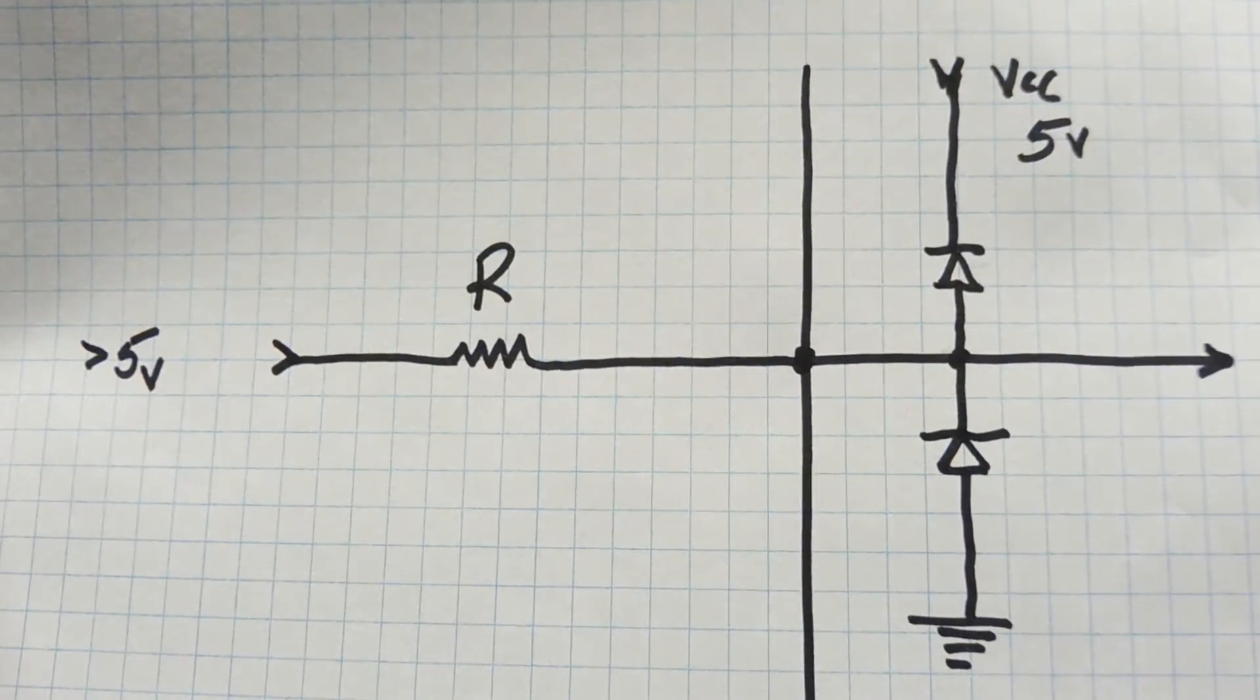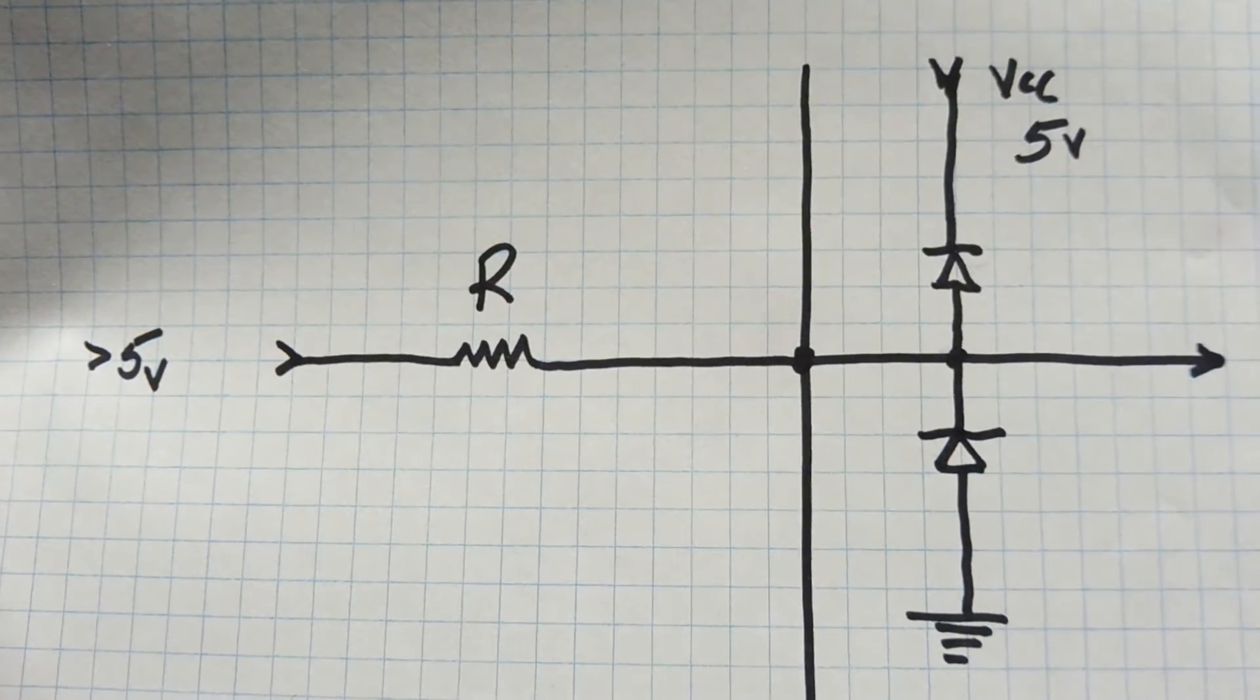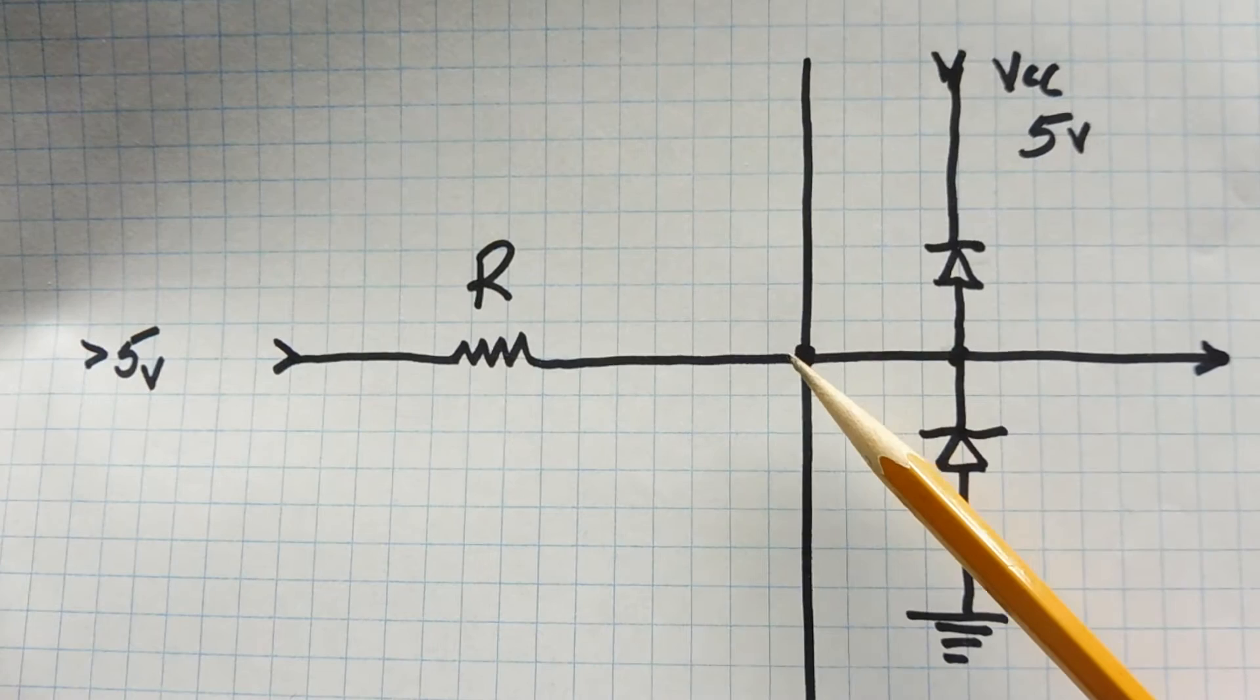The first thing that we're going to look at are some GPIO input interfaces. So the first thing we see here is an input pin of a microcontroller.